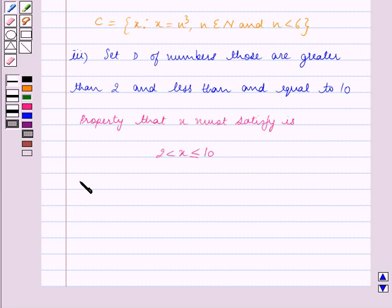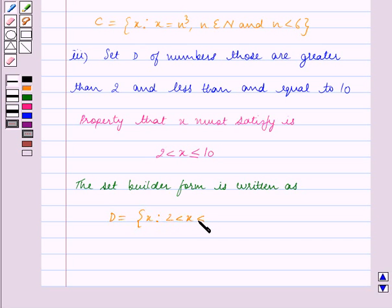So the set builder form is written as the set D is equal to x such that 2 is less than x is less than or equal to 10.